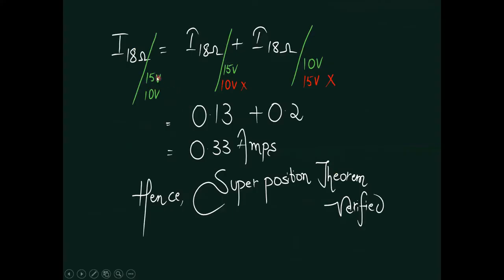Finally, we observe: when both sources are acting, the value is 0.33 amperes. With only the 15 volt source active and 10 volt short-circuited, we get 0.13 amperes. With only the 10 volt source active and 15 volt short-circuited, we get 0.2 amperes. The algebraic sum of the individual source responses — 0.13 plus 0.2 — equals 0.33 amperes. Hence, we can verify the superposition theorem.